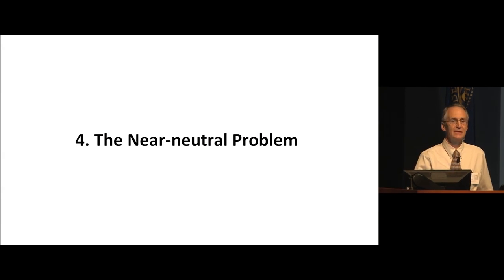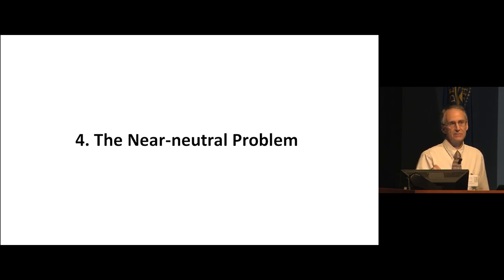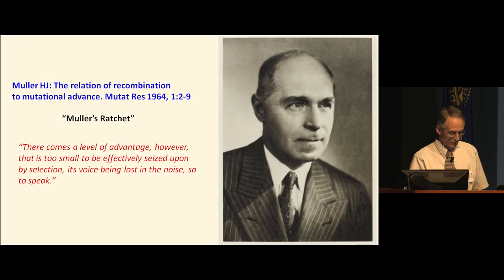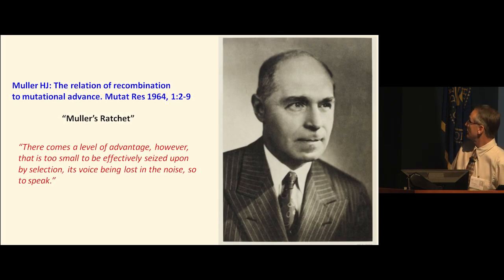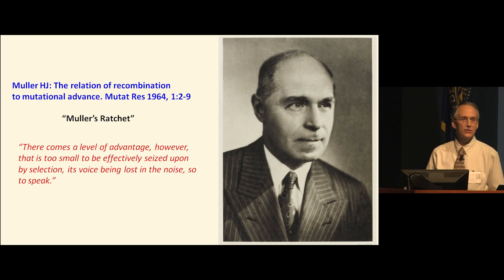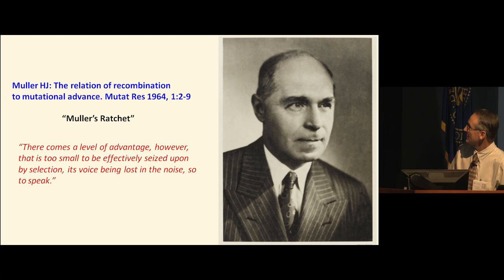Number four: the near-neutral problem. The near-neutral problem is a longer-term concern, but this is the most significant problem. The near-neutral problem was first recognized by Mueller, in his Mueller's Ratchet paper. He says: 'There comes a level of advantage that is too small to be effectively seized upon by selection, its voice being lost in the noise.' Think of it this way: you have a genome of three billion letters, and you take out or change one letter randomly. Is that going to have a huge fitness effect? It's going to have a tiny fitness effect. It's like rust on a car — you can't see each rust event, but it is continuous and destructive.